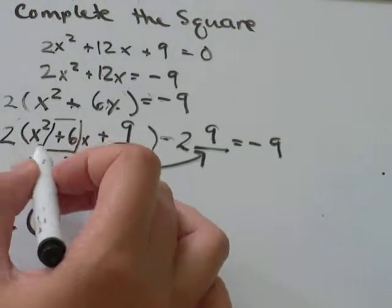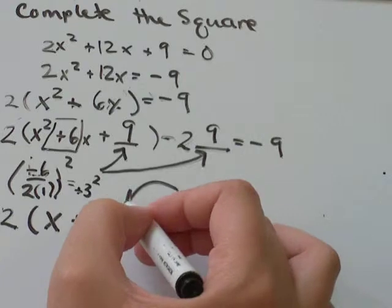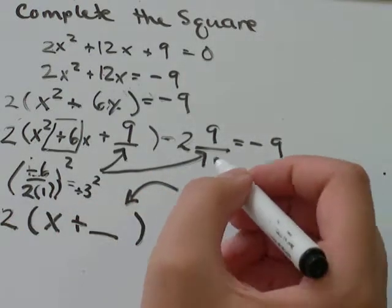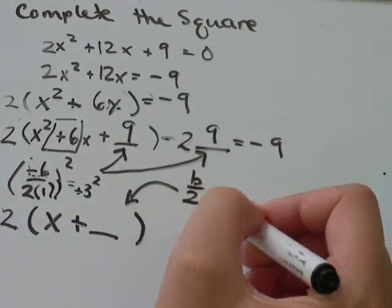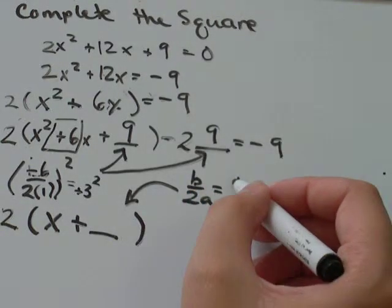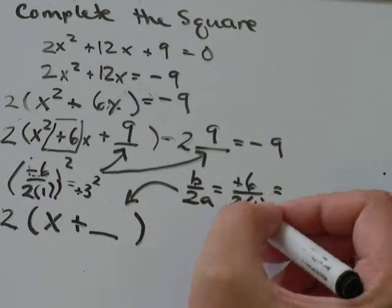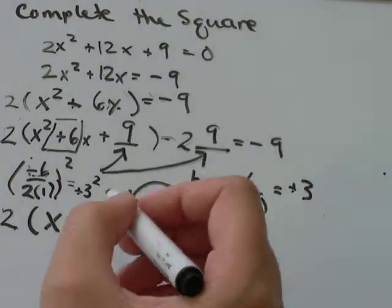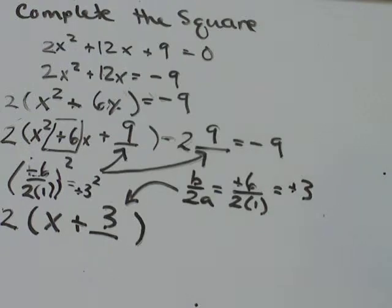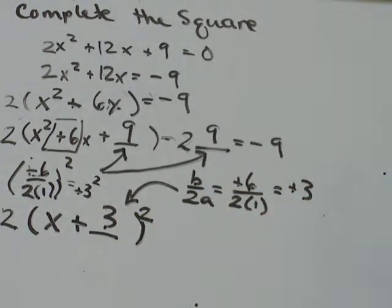Or you can do the sneaky way, which is x plus, in this blank, you're going to take the same thing you had here, b over 2a, but just don't square it. Sign of b matters. It was positive 6 over 2 times a is always 1. Positive 6 divided by 2 would be positive 3. So you can stick that in there to be really sneaky. And then just square it afterwards. Now we have a perfect square. (x + 3)².